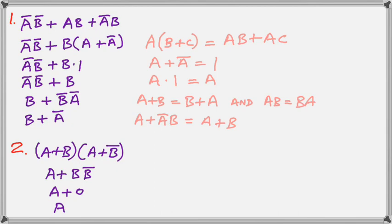Now let's look at the next one. This is just an easy application of the distributive law. The next thing we have to do is realize that B and B bar is zero, just as A and A bar is zero. And finally, A or zero is just A.